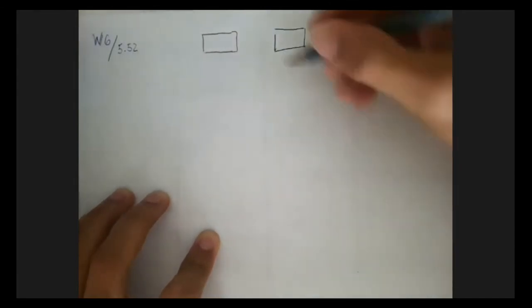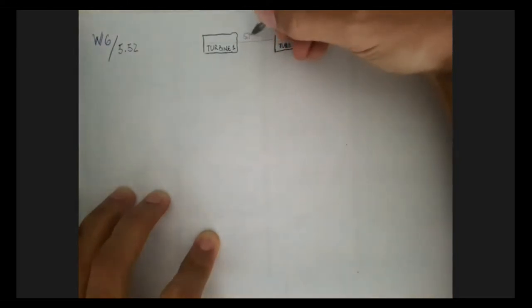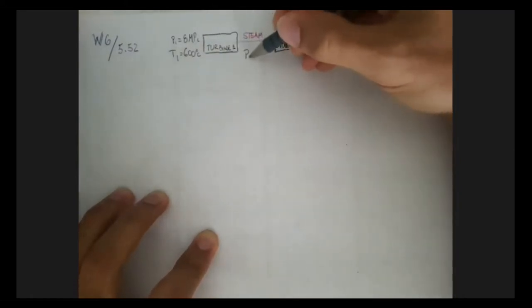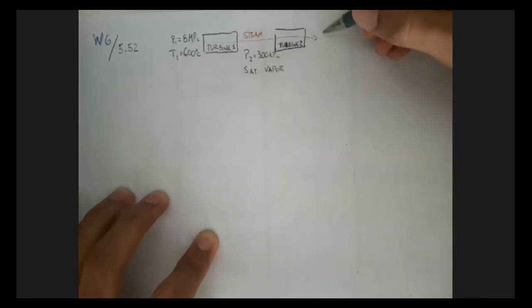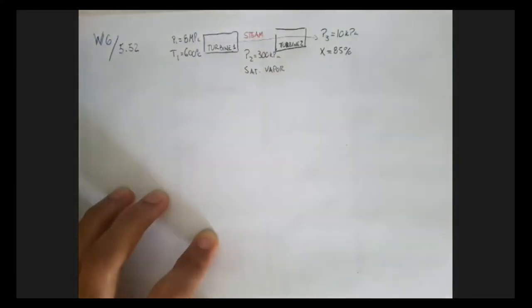Let's draw two rectangles representing the two turbines. Steam flows from turbine one to turbine two. We know that P1 is 8 megapascals and T1 is 600 Celsius. We know P2 is 300 kilopascals and the steam is a saturated vapor. For state 3, we know P3 is 10 kilopascals and the quality is 85%.